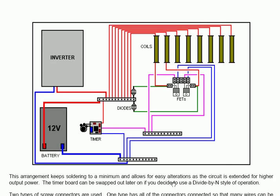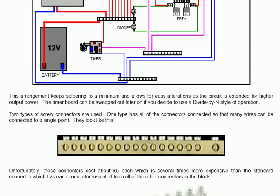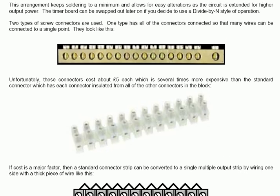This is the board. And on the board you have mounted a 12 volt, 12 amp power battery and an inverter to give the output. Your timer circuit there, which is the circuit above, is attached to the board. And the field effect transistors are there. And the coils are all connected to a common point here. This keeps the soldering to a minimum and allows for easy alterations as the circuit is extended for higher output power. The timer board can be swapped out later on if you decide to use a divide by N style of operation.